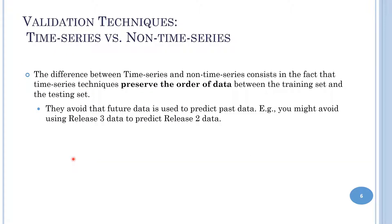Let's present the different types of validation techniques. The difference between time series techniques and non-time series techniques is that time series techniques preserve the order of data between the training set and the testing set. In other words, time series techniques avoid that future data is used to predict past data — for example, avoiding using release 3 data to predict release 2 data.